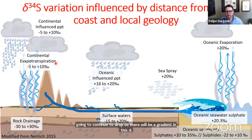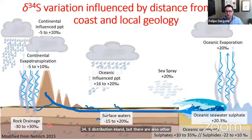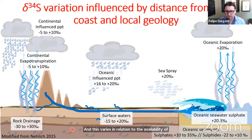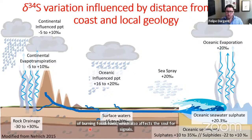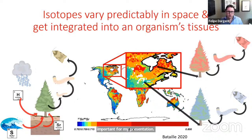As you keep moving inland, δ34S values continue to drop, creating a gradient in its distribution. There are also other things that make sulfur vary, such as local geology, especially when you are far from the sea, which varies in relation to the availability of sulfates depending on the types of rocks present. One thing missing from this diagram is the role of burning fossil fuels, which also affects sulfur signals.